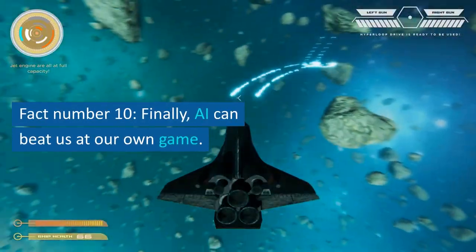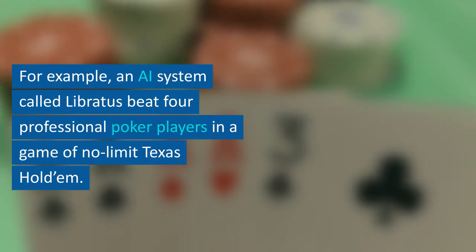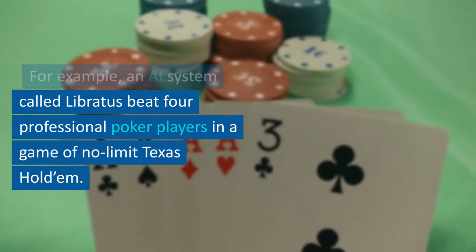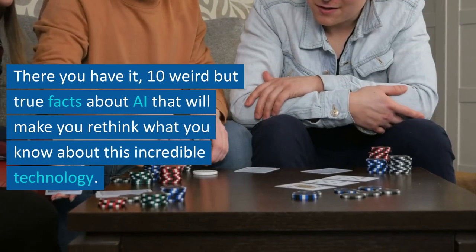Fact number 10. Finally, AI can beat us at our own game. For example, an AI system called Libratus beat four professional poker players in a game of no-limit Texas Hold'em.